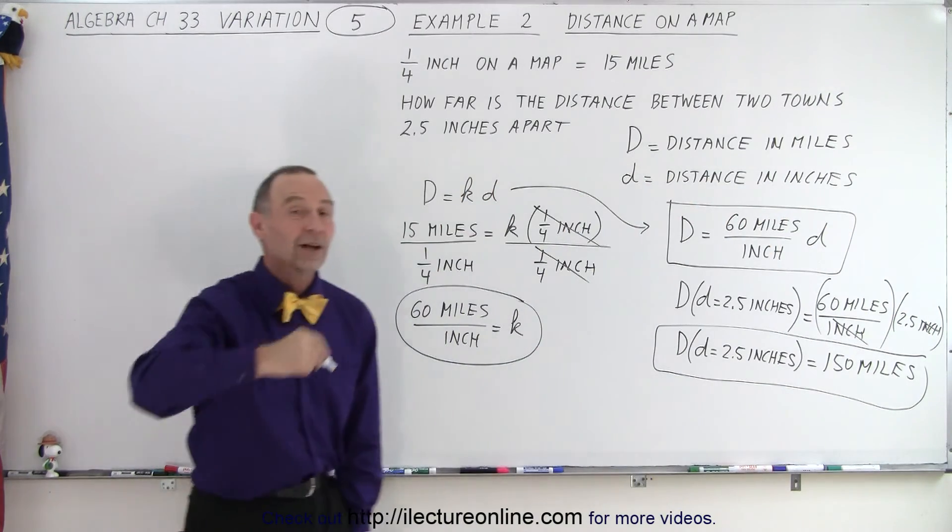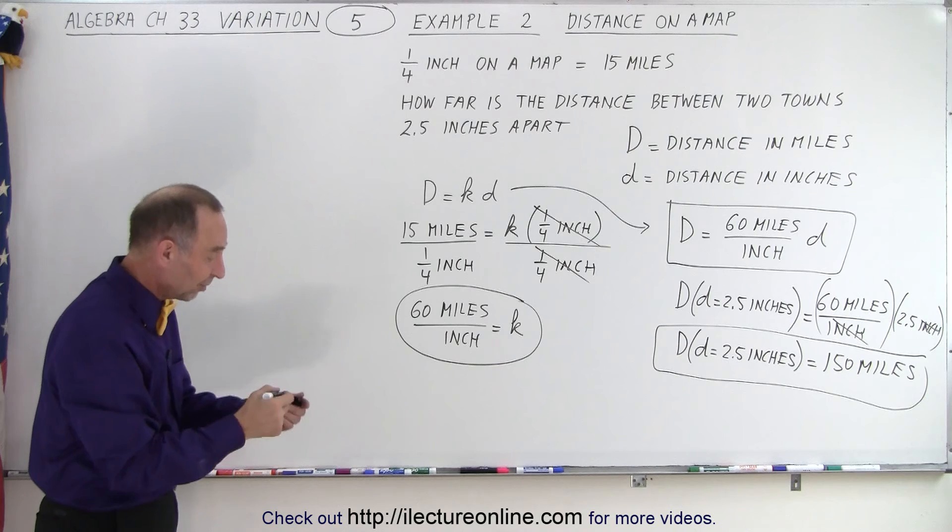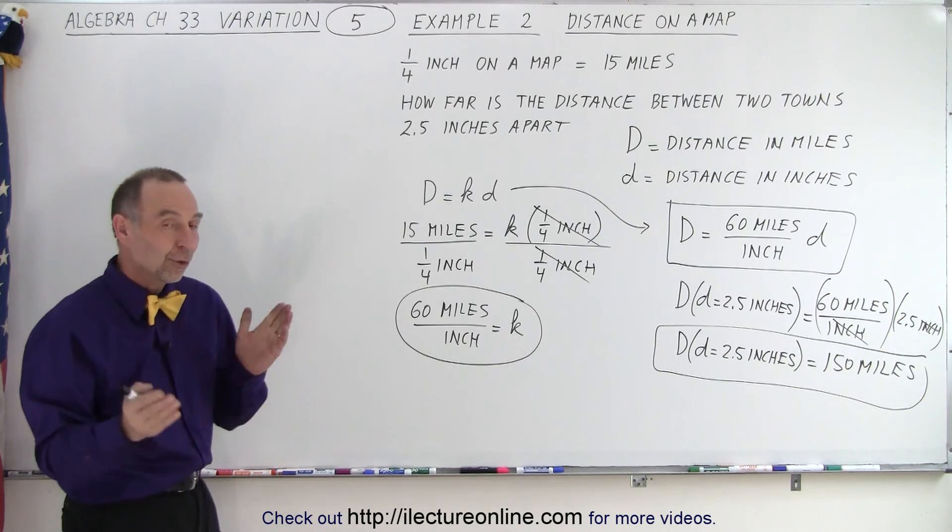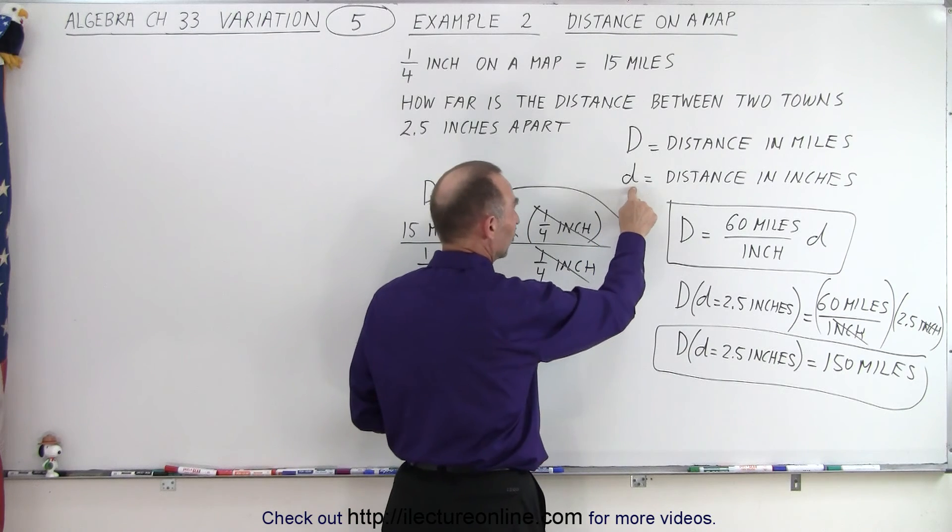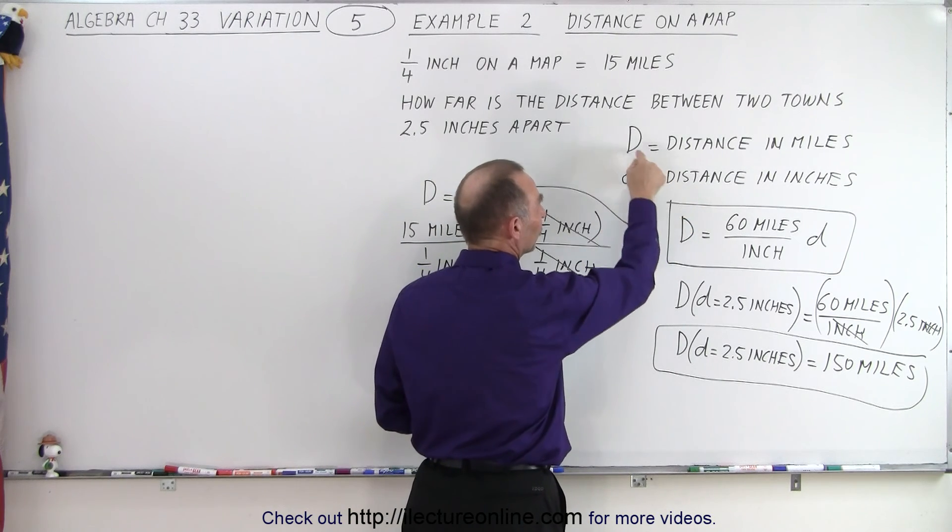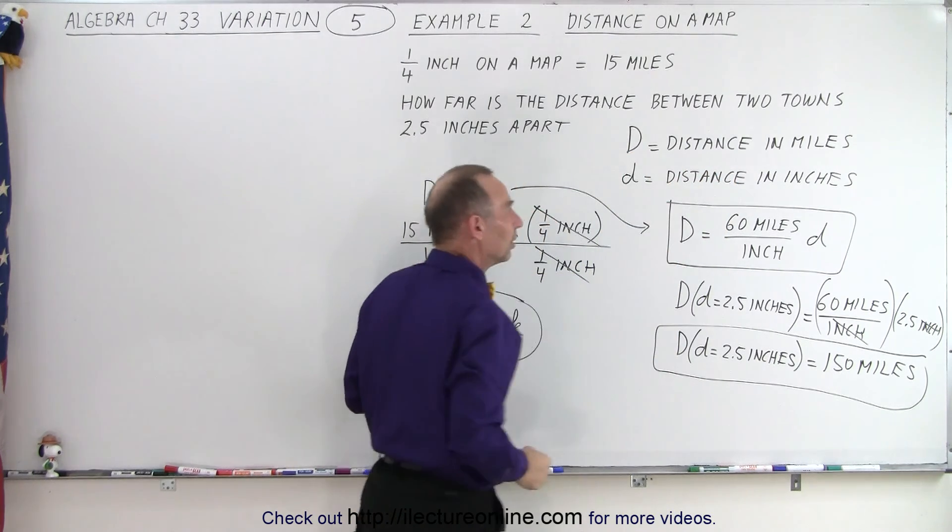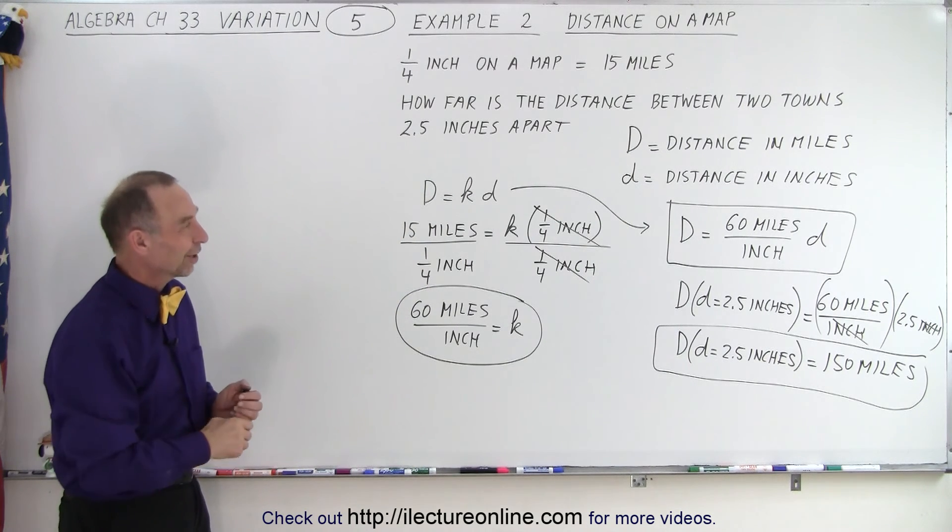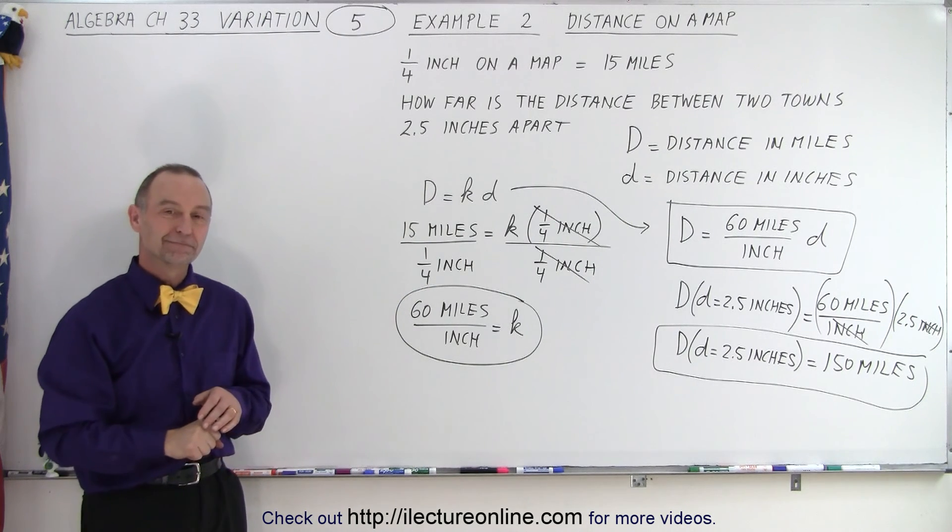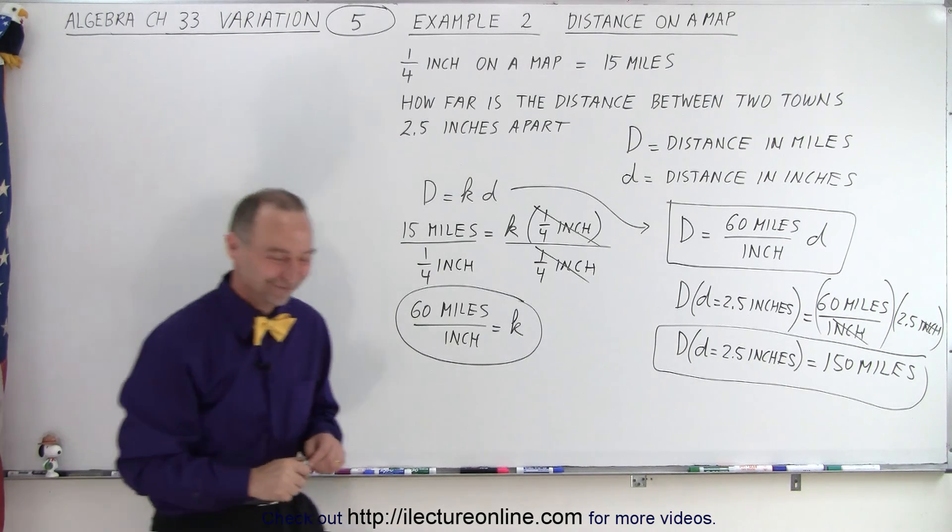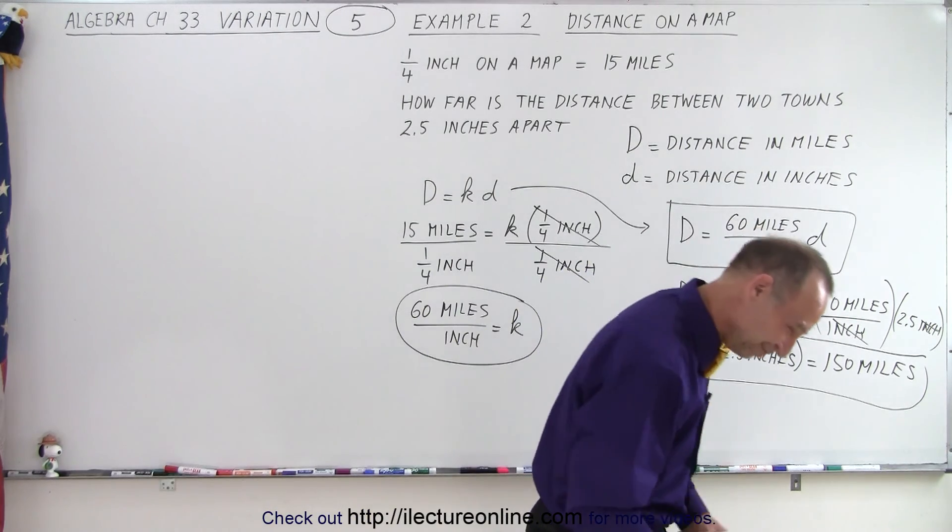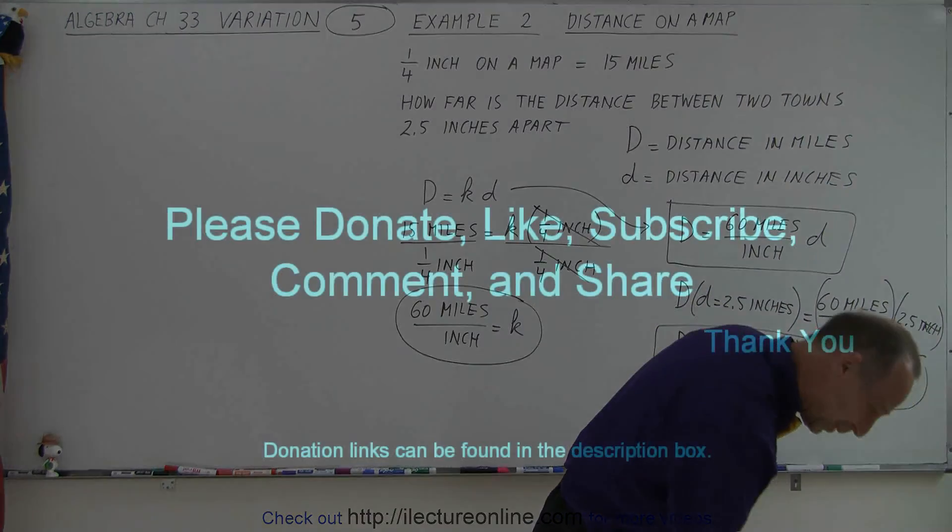And that's how we use the concept of variation by knowing a relationship between two variables—in this case, the distance little d on the map versus the distance between the two towns. And that is how it's done. All right, what is next?